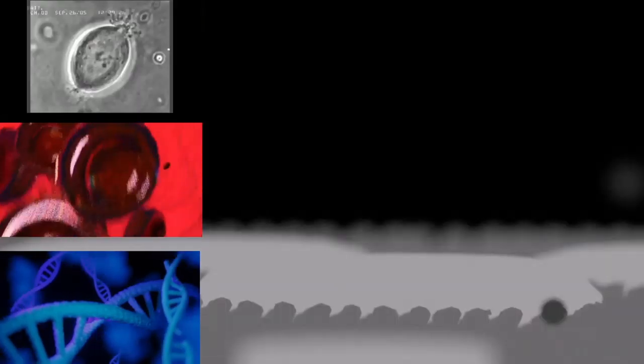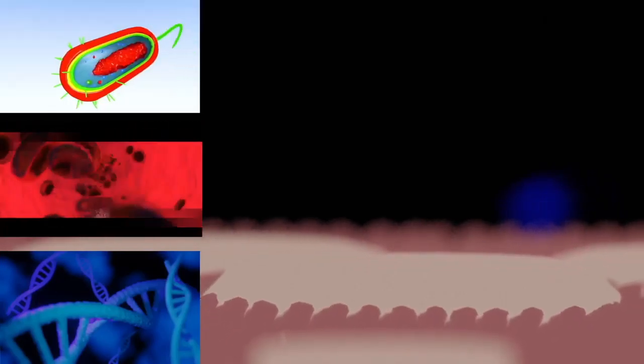Endoreduplication or endoreplication occurs when chromosomes duplicate, but the cell does not subsequently divide. This results in polyploid cells or, if the chromosomes duplicate repeatedly, polytene chromosomes. Endoreduplication is found in many species and appears to be a normal part of development.